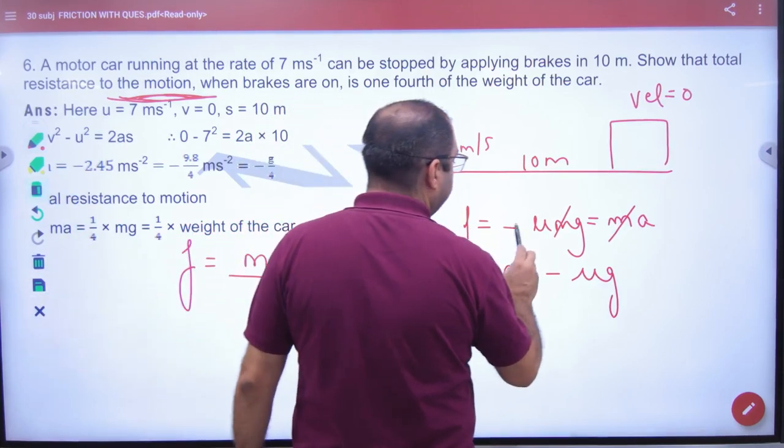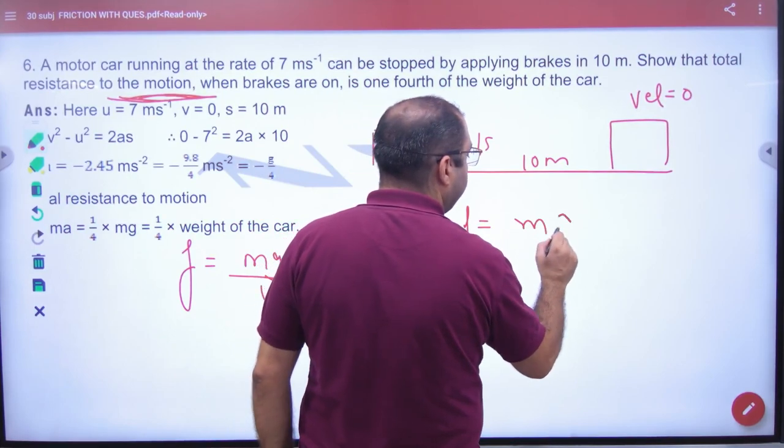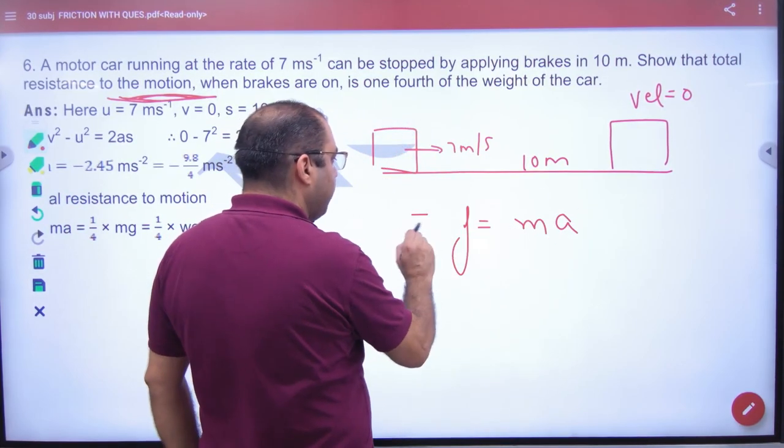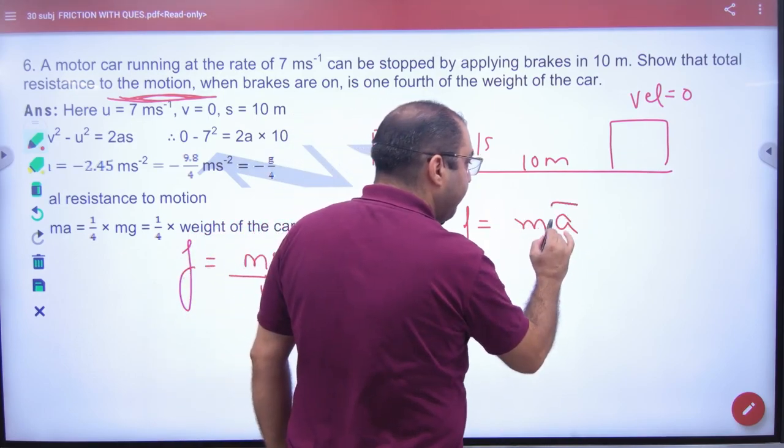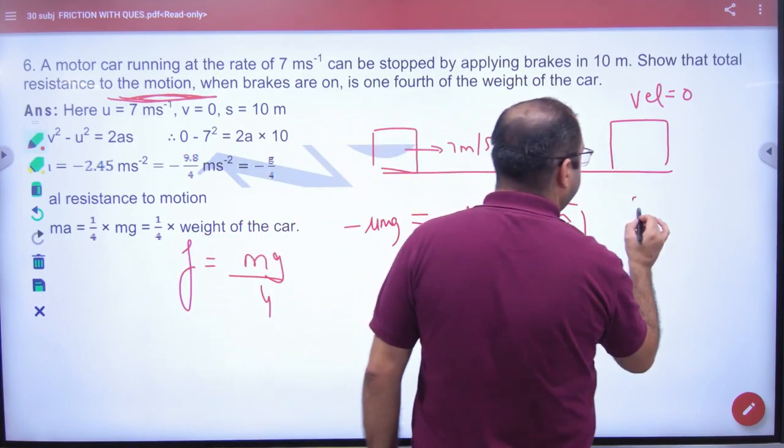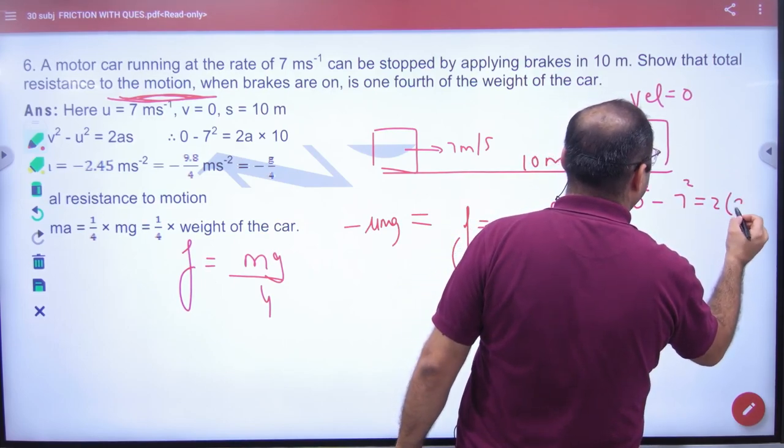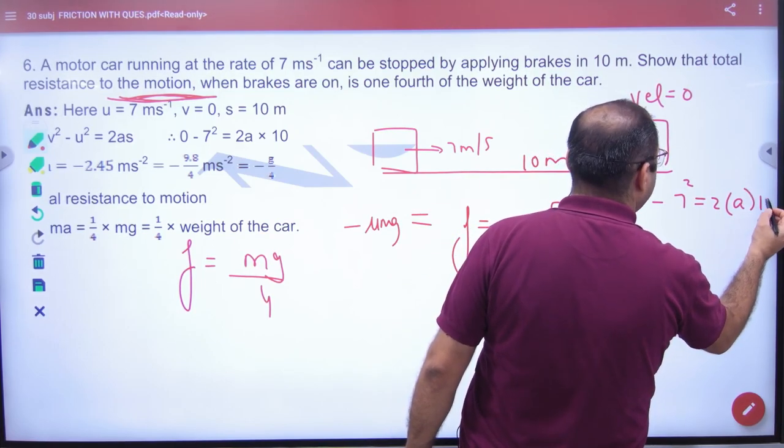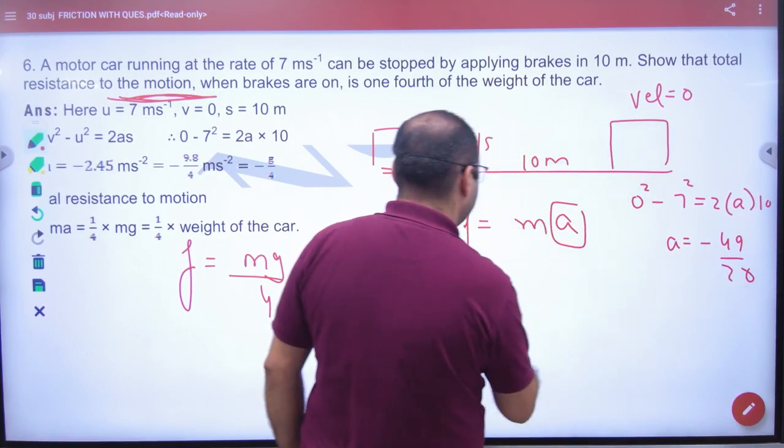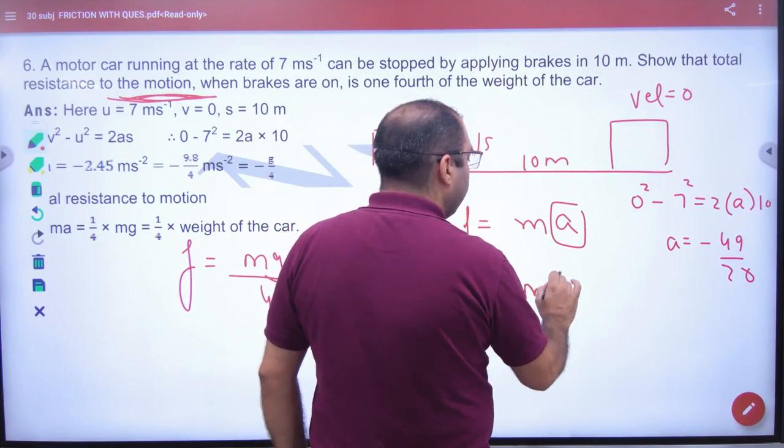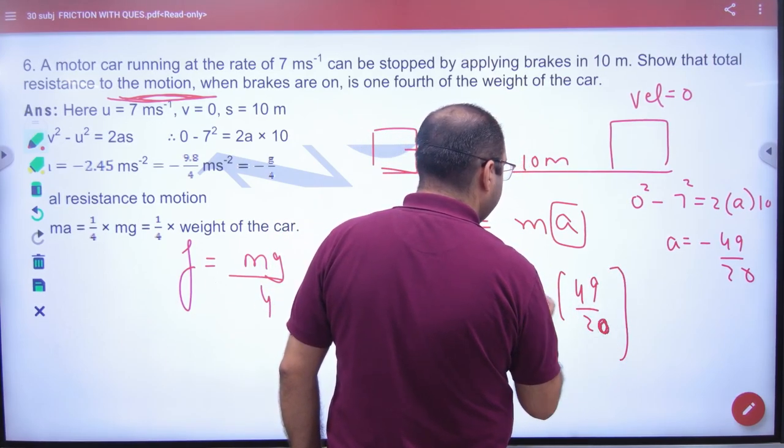Apply the equation: final velocity² - initial velocity² = 2 × a × distance. So 0 - 7² = 2a × 10. The value of a will be -49/20. Therefore, the force value will be m × 49/20.